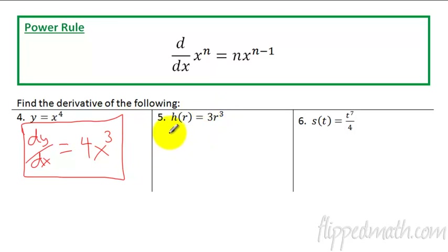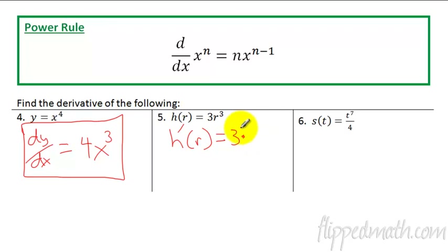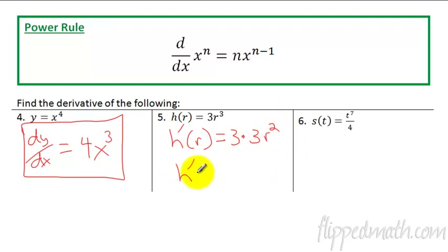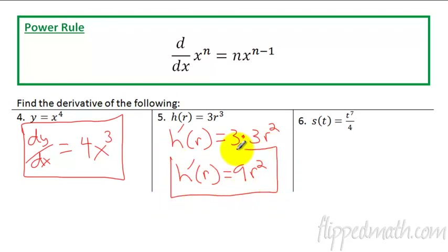What if you have a number in front? It's still just as easy. For h(r) = 3r³, we leave the three in front, then the three comes down from the exponent: three times three is nine, and it becomes r². So h'(r) = 9r². That's the derivative giving us the slope of the tangent line or the instantaneous rate of change.